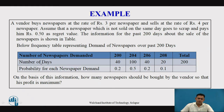This table shows the number of newspaper demand: 200, 204, 206, and 208. These demands occurred over 40 days for 200 papers, 40 days for 204 papers, again for 206, and 20 days where there is a demand of 208 papers. The probability for each newspaper demand is also shown in the table.